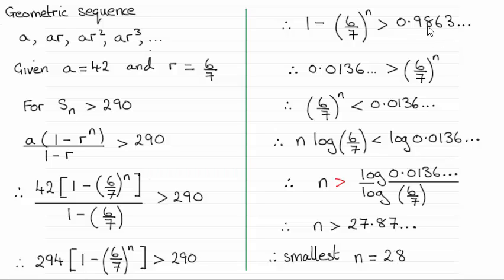Next I've divided both sides by 294 and that gives me this value here, 0.9863 and so on. And at this point all I've done is I've added 6 sevenths to the power n to both sides. That's taking it over to the right hand side and subtracted 0.9863 and so on from both sides and that's given me this value here 0.0136 and so on.